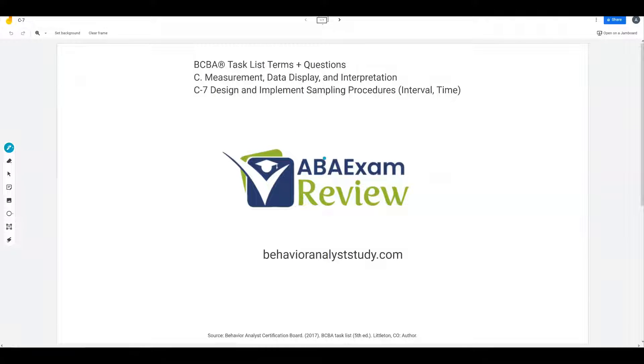Welcome back to ABA Exam Review and the continuation of our BCBA task list series. We're continuing today with C7 sampling procedures, specifically interval recording and time sampling. Nearing the end of our measurement task list section, we're finishing up with discontinuous measurements. With discontinuous measurements, we're not taking data throughout the entire session, day, or class. Instead, we're just taking a sample of the behavior using a sample of the time.